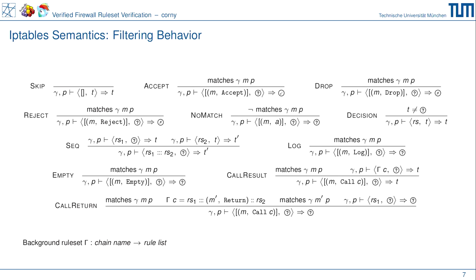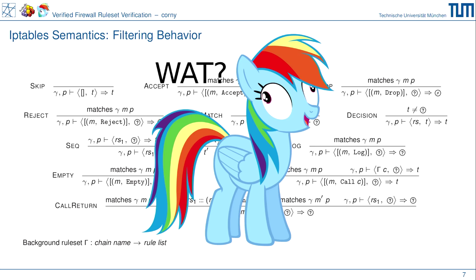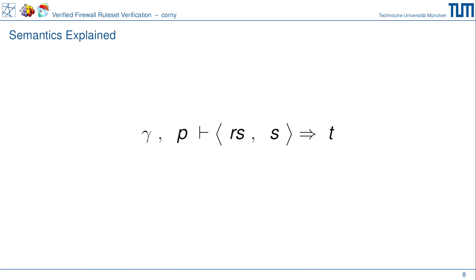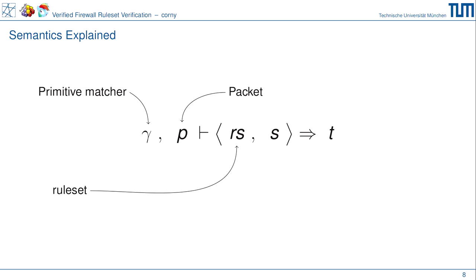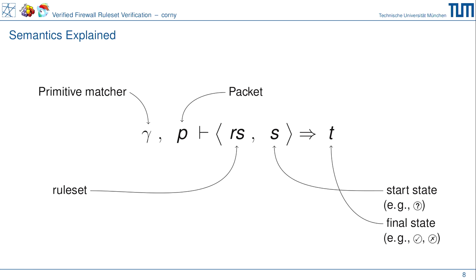Als Nächstes brauchen wir die Filterregel von iptables. Die gute Nachricht: das passt alles auf eine Folie — wir brauchen keine ellenlangen Man-Pages dafür. p ist das Paket, gamma ist der primitive Matcher, rs ist das Ruleset (die Liste von Regeln), s ist der Startzustand — üblicherweise 'unentschieden' — und t am Ende ist der finale Zustand, der angibt, ob die Firewall entschieden hat, das Paket zu akzeptieren oder wegzuwerfen.